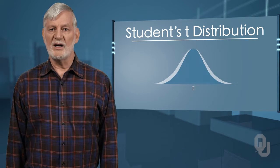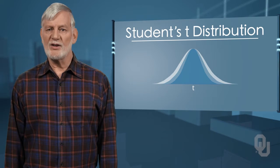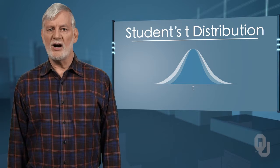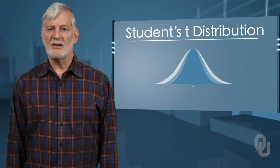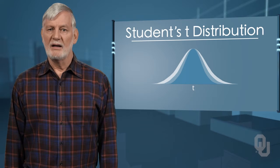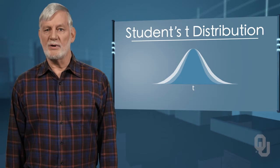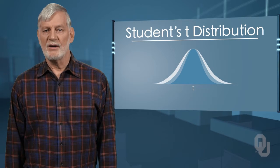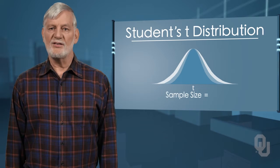What the student's t-distribution does is spread out the horizontal axis so it takes a larger number of standard deviations to capture the same amount of probability. In reality, there are an infinite number of student's t-distributions, one for each adjustment to the sample size.